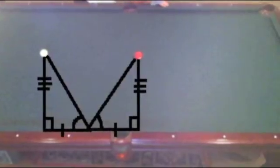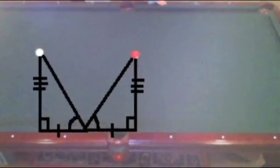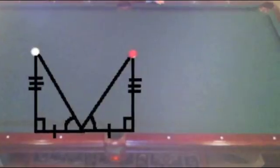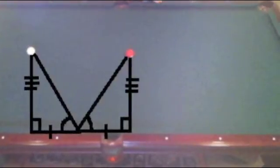By CPCTC, we now know that these two segments are congruent. This means that to successfully bank the ball, you must aim for the midpoint between the two right angles.